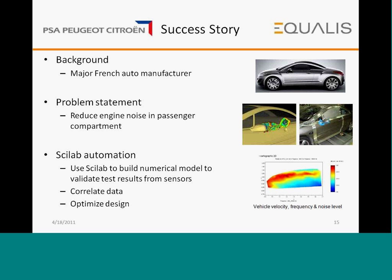In the next few slides, we have a list of some companies using Scilab and how they use it. PSA Peugeot, a French auto major, was interested in studying noise problems using Scilab. Specifically, they wanted to do automation using Scilab — building a numerical model with test data and simulation data to perform correlation between test and simulation data and optimize their design for reducing noise criteria.